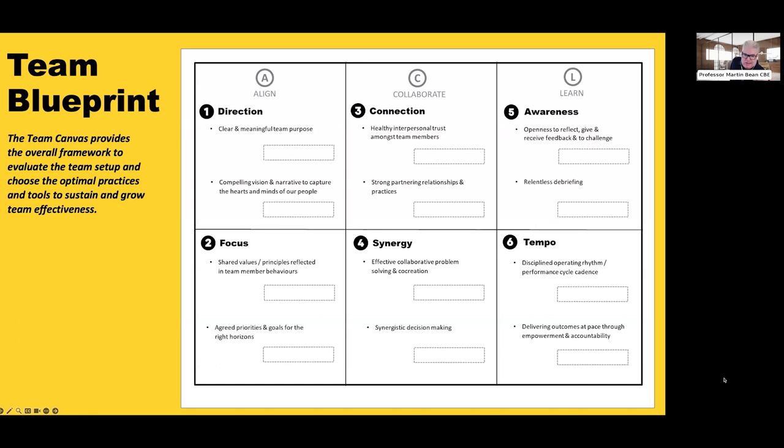Direction is all about the team, not the organization, not the enterprise, the team - that team having a clear and meaningful team purpose and having a compelling vision and narrative to capture the hearts and minds of your people. And by that, we mean your staff, in our case at RMIT, our students, our stakeholders. What is the purpose of that team and what is the narrative?